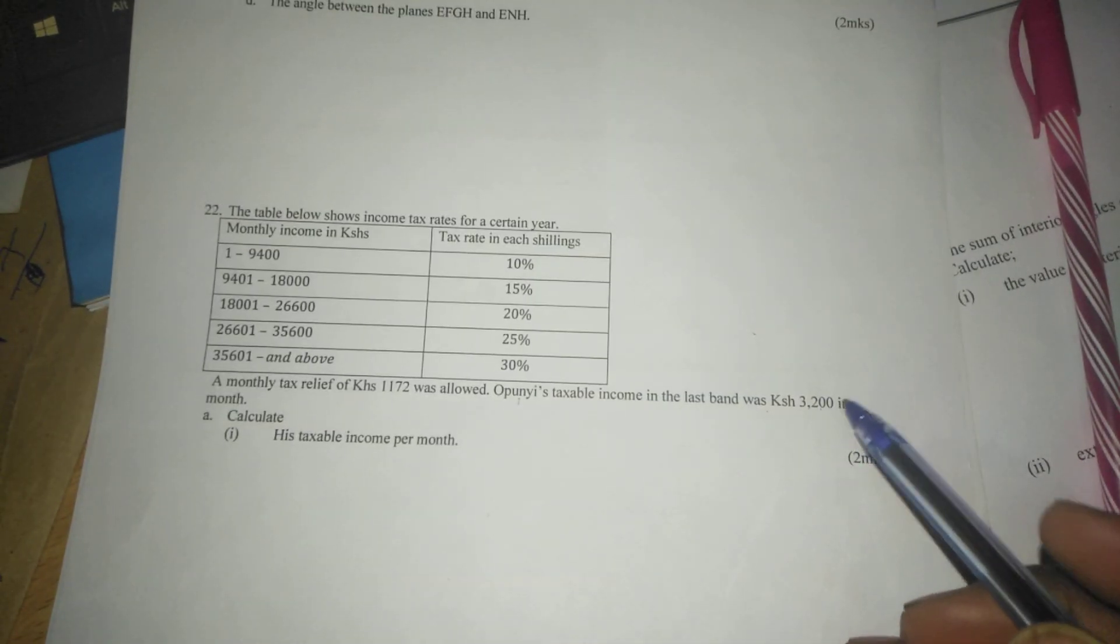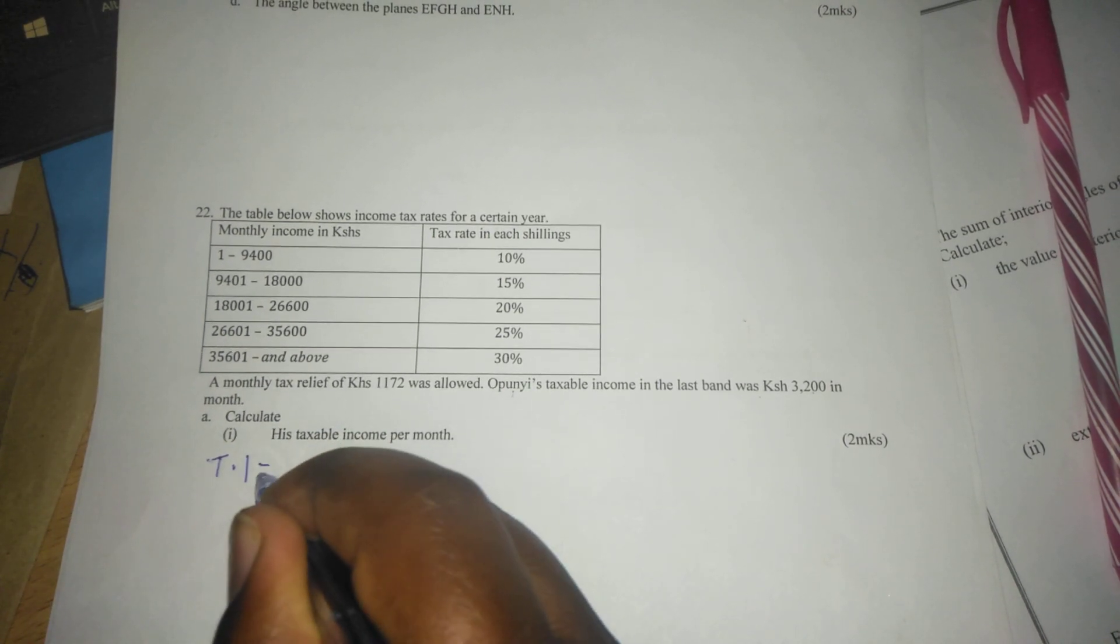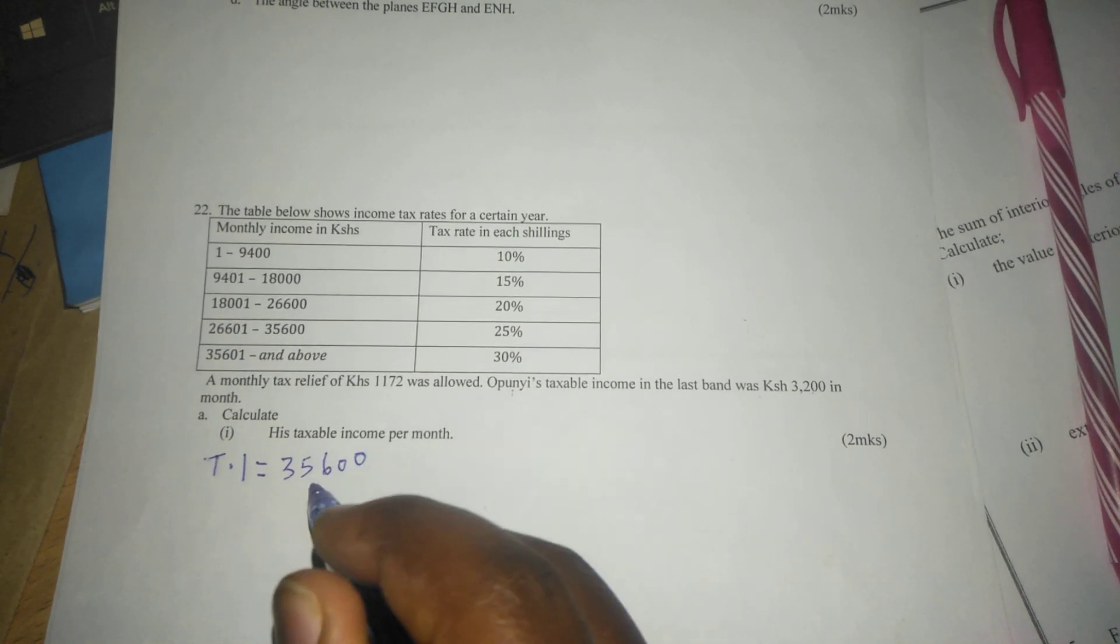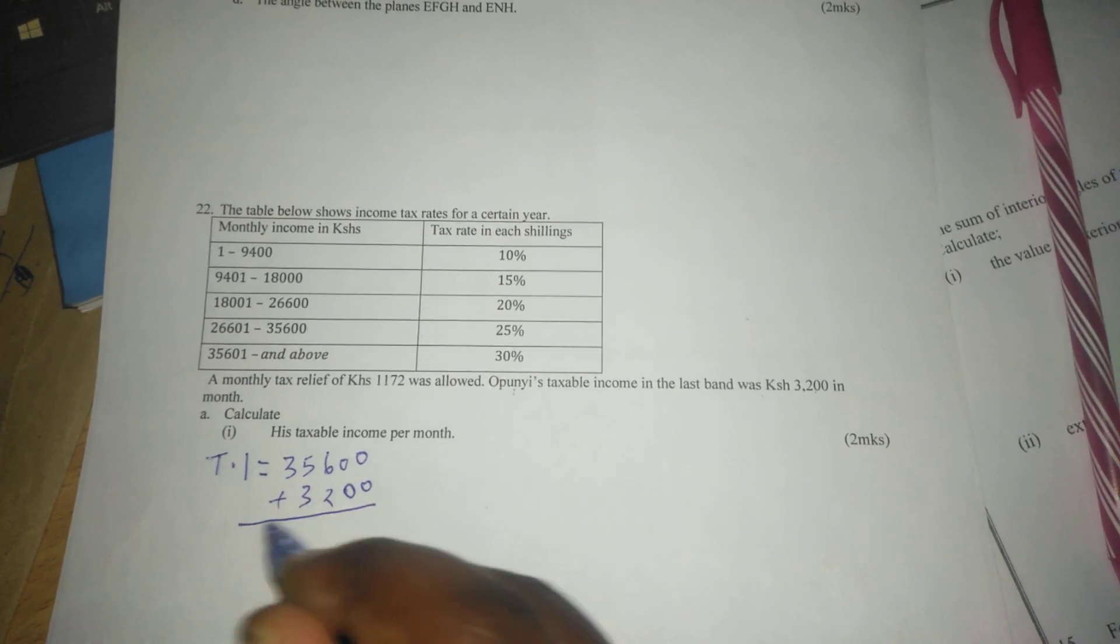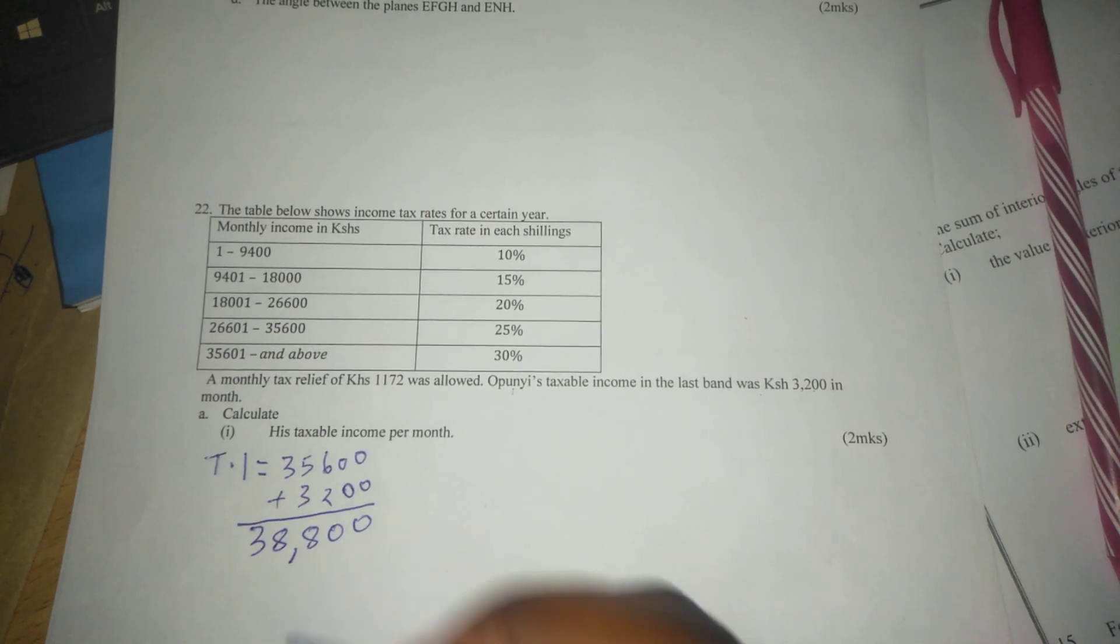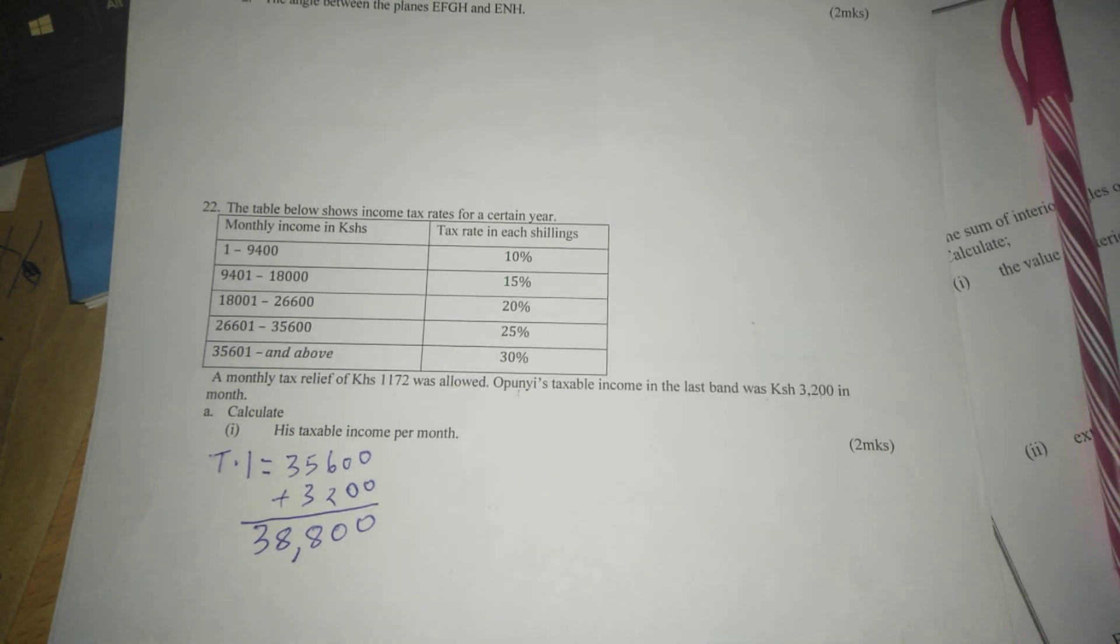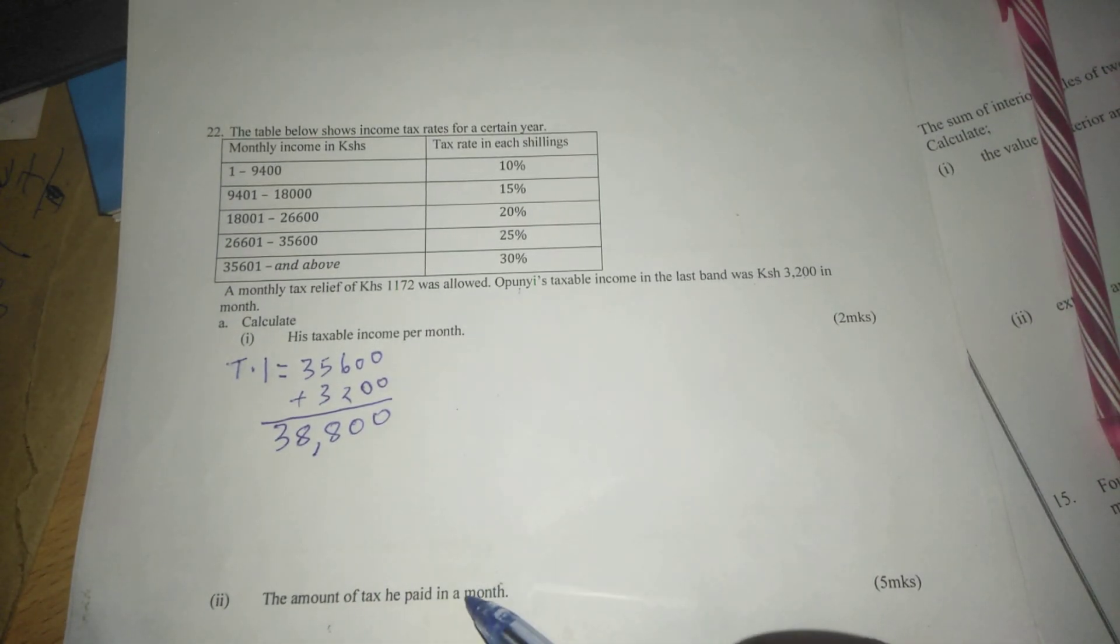For us to get his taxable income, we will just take 35,600 and add that 3,200, which gives us 38,800. This is the amount in Kenya shillings which totals to his taxable income. Now we are told to calculate the amount of tax he paid in a month.